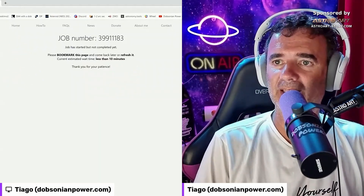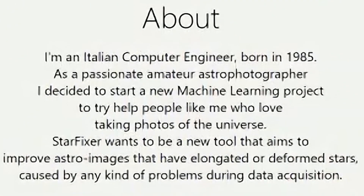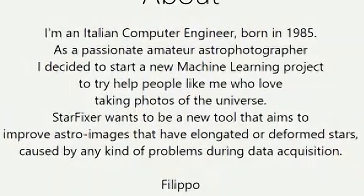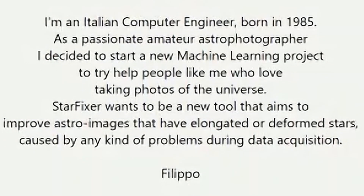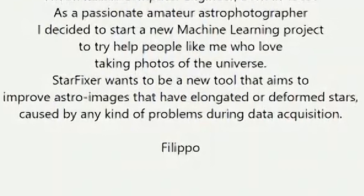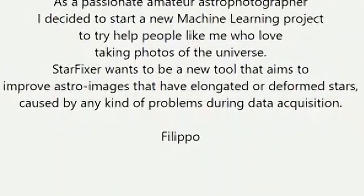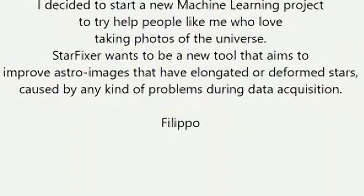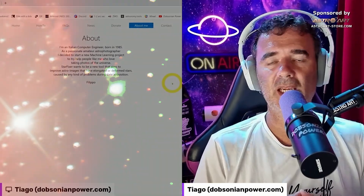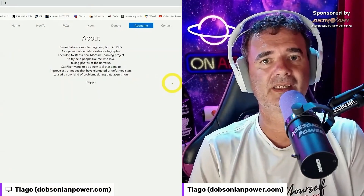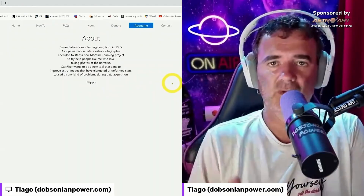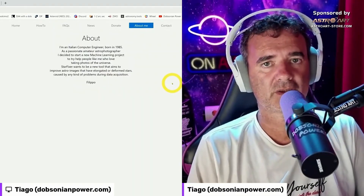While it's processing, I'll tell you about the creator. He's an Italian computer engineer born in 1985. As a passionate amateur astrophotographer, he decided to start a machine learning project to help people like him who love taking photos of the universe. Starfixer aims to improve astro images that have elongated or deformed stars caused by any kind of problems during data acquisition. Note: stars with halos are not fixed — the software doesn't fix problems with chromatic aberration. This is a quick and simple fix.